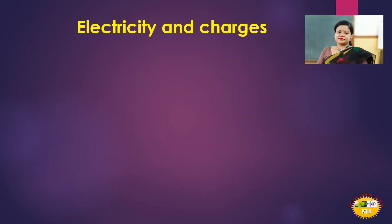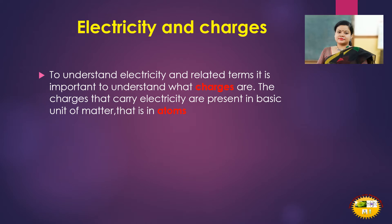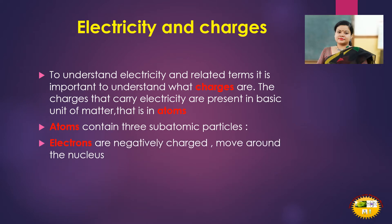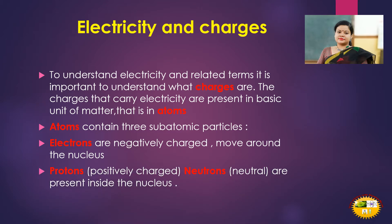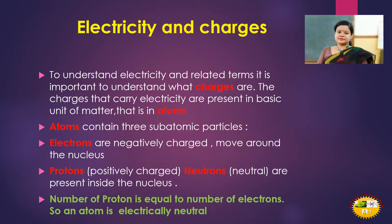To understand electricity and related terms, it is important to understand what charges are. The charges that carry electricity are present in the basic unit of matter, that is in atoms. Atoms contain three subatomic particles: electrons that are negatively charged and move around the nucleus, protons that are positively charged, and neutrons that are neutral, present inside the nucleus. The number of protons is equal to the number of electrons, so an atom is electrically neutral.